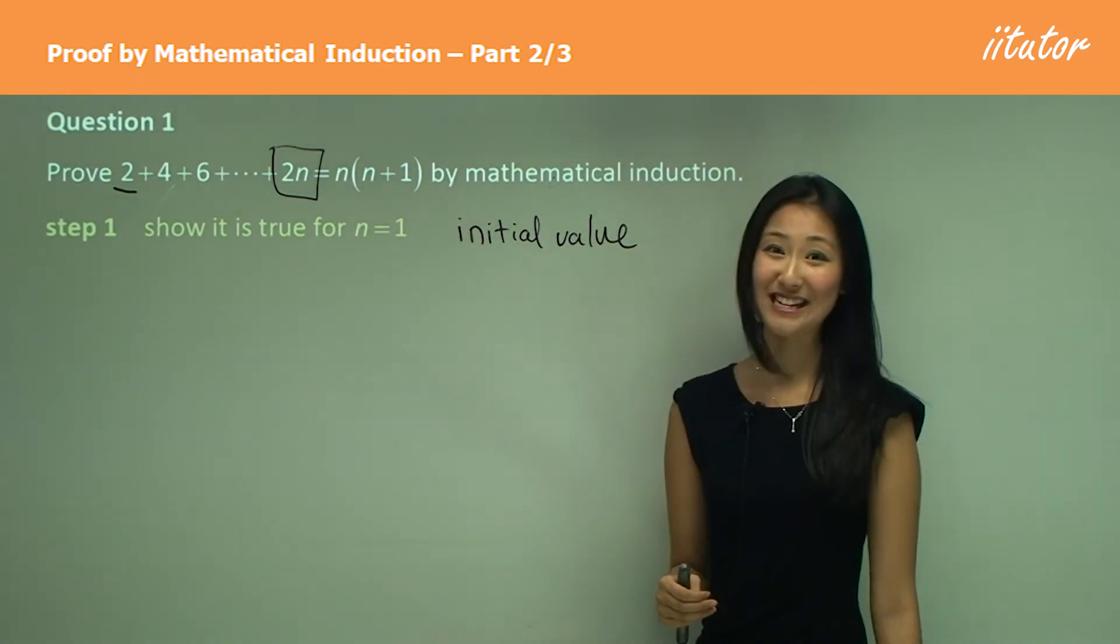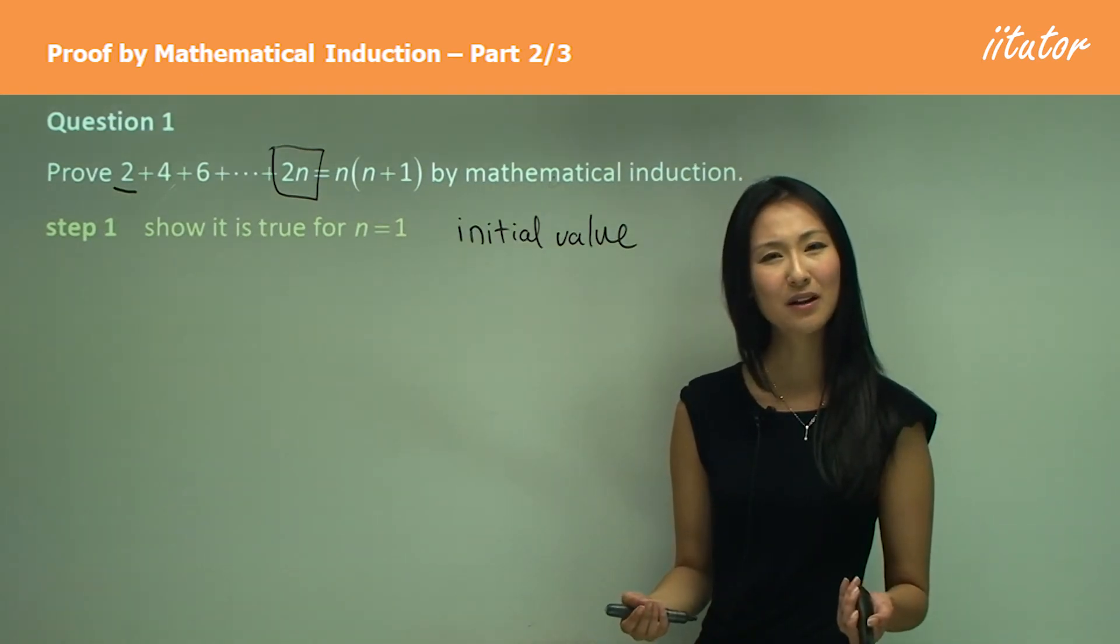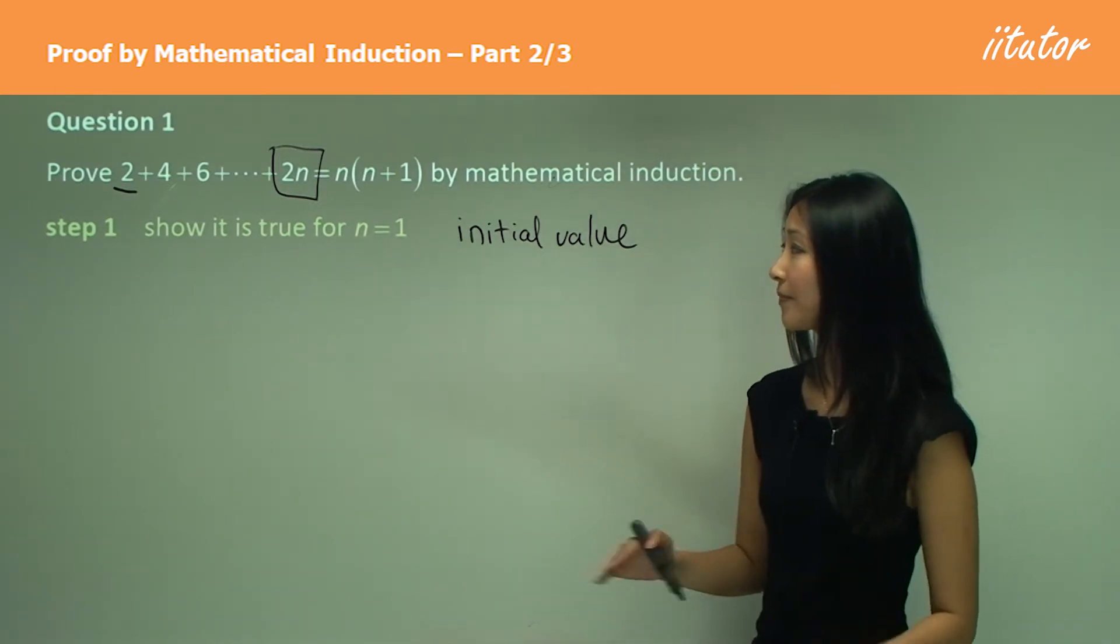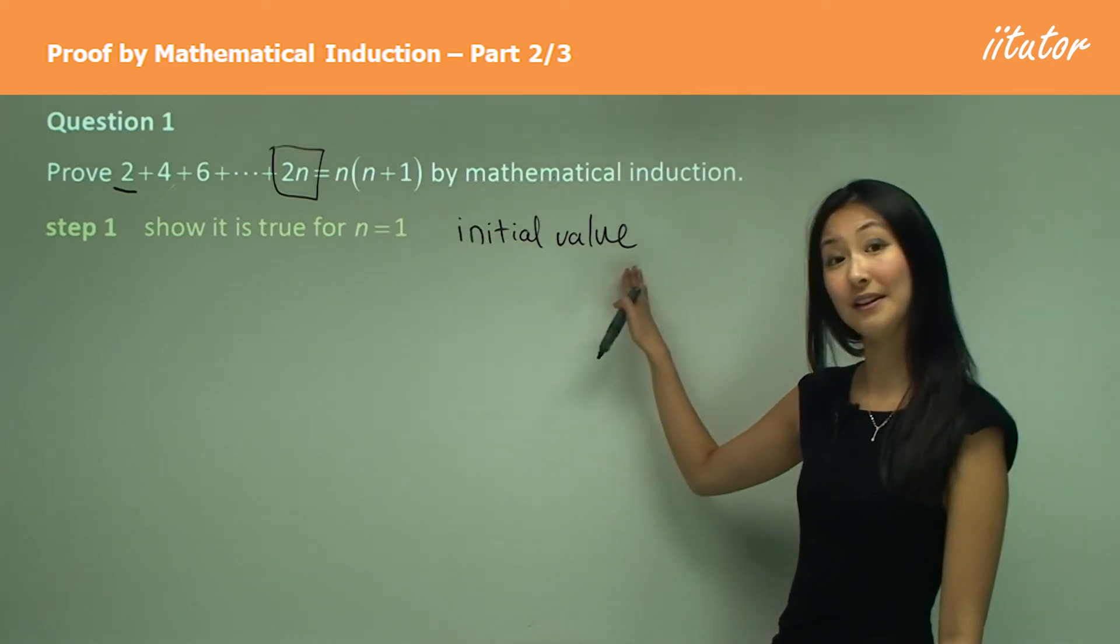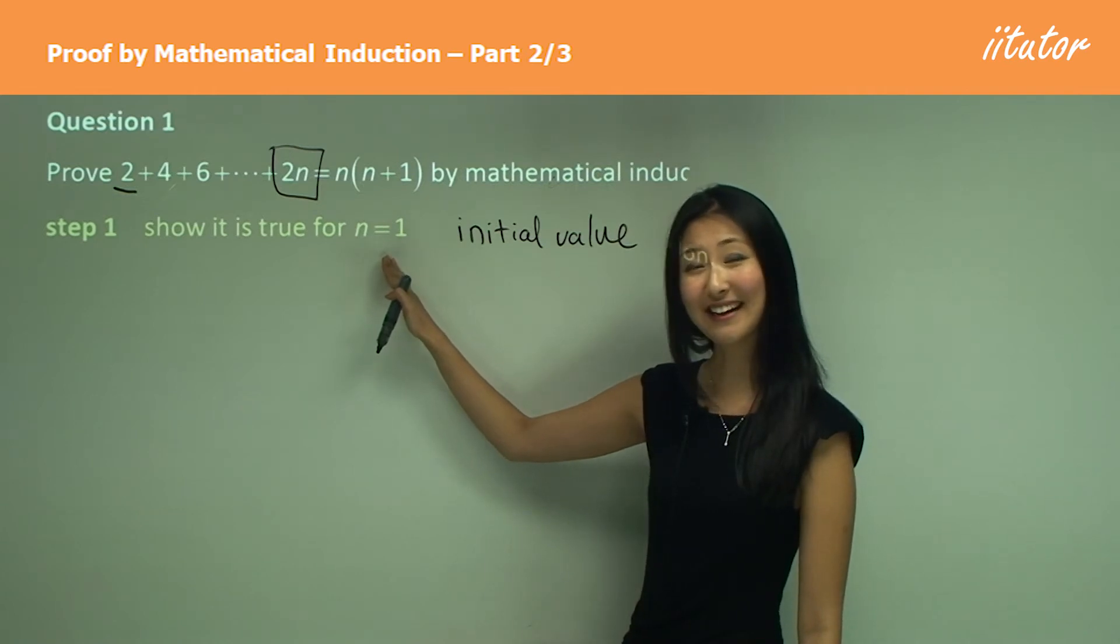So it's really easy for students just to assume that it's always going to be n equals 1, so I don't want you to make that mistake. I want you to remember that step 1 is to show it's true for the initial value of n, and then we need to always work out what that n value is.